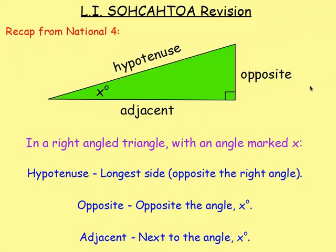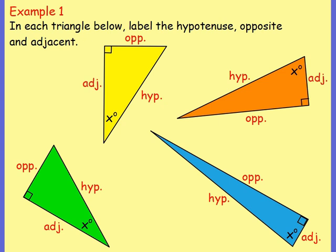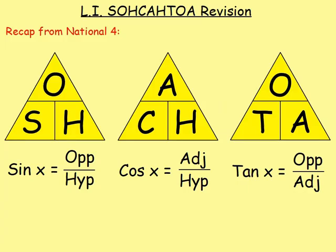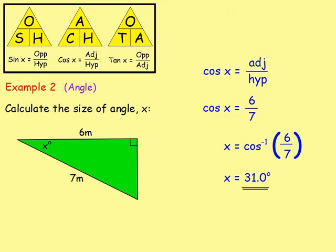We started off with some SOHCAHTOA revision from National 4. We were looking at the different sides: the hypotenuse, the adjacent, and the opposite. Hopefully you can name them absolutely fine if you have a right-angled triangle and a given angle. There was an example where I gave you different triangles, gave you X the angle, and asked you to fill out the opposite, adjacent, and hypotenuse. We then looked at sine X, which is opposite over hypotenuse; cos X was adjacent over hypotenuse; and tan X was opposite over adjacent.